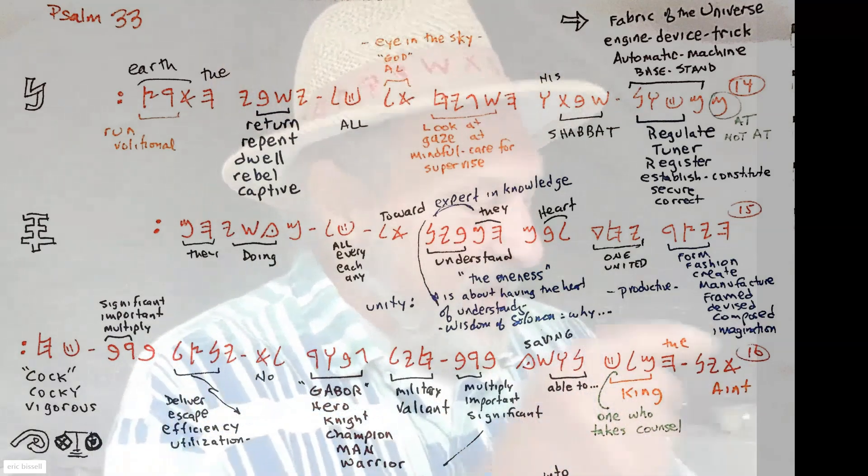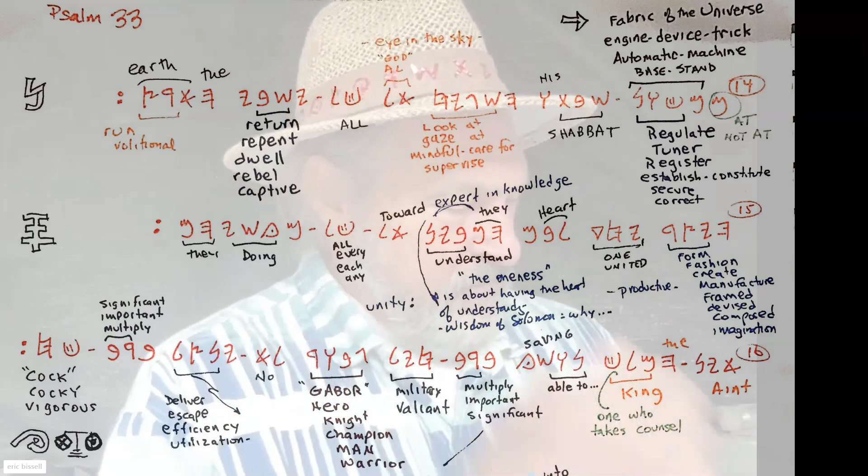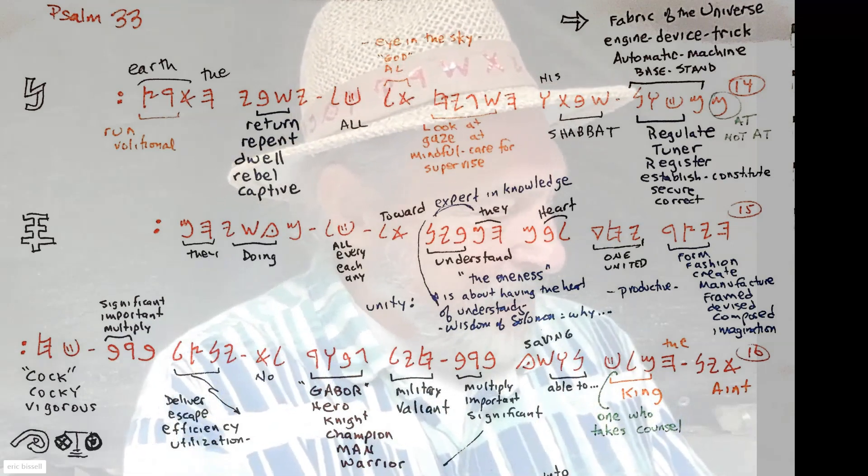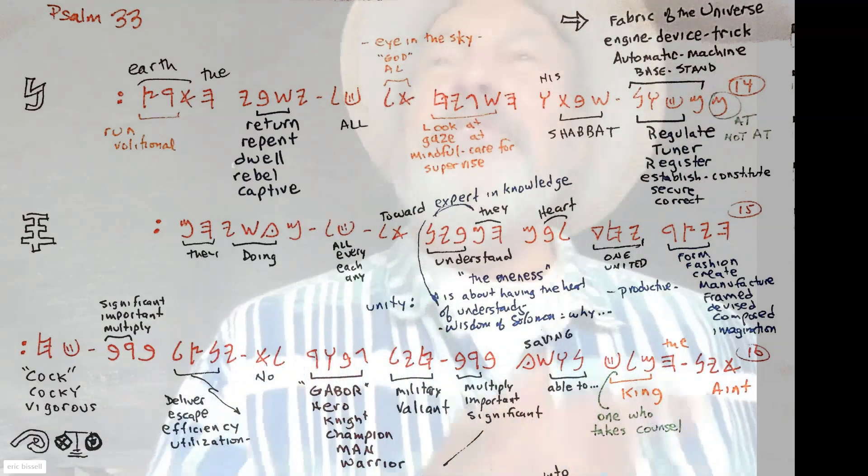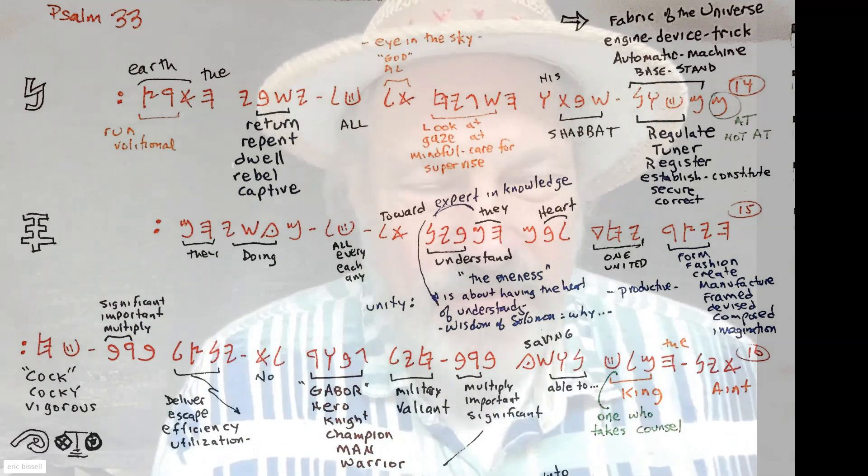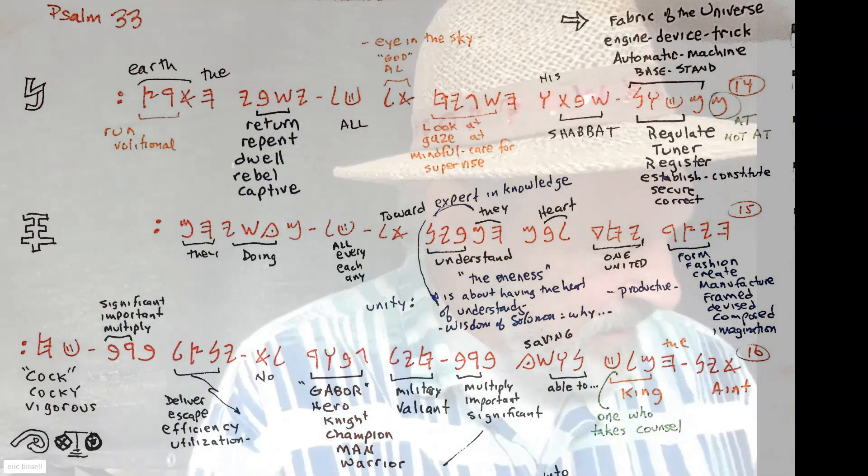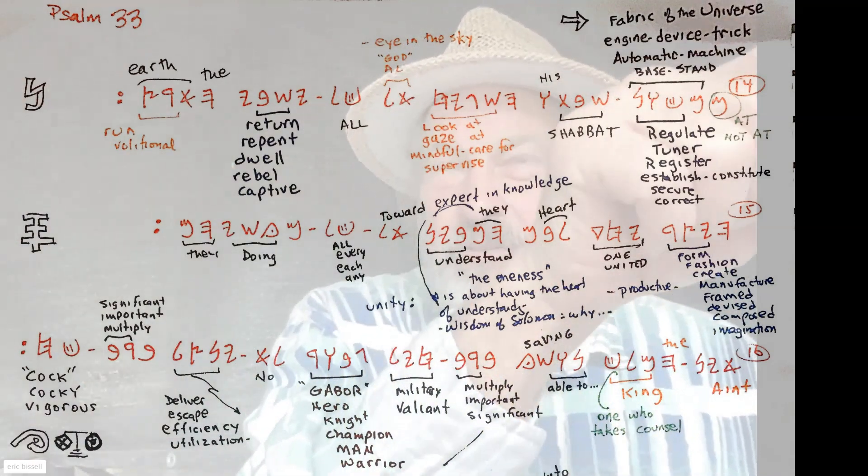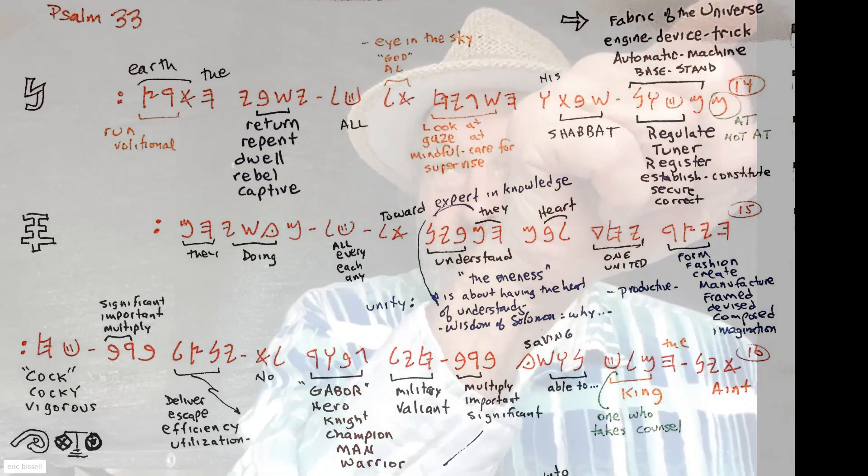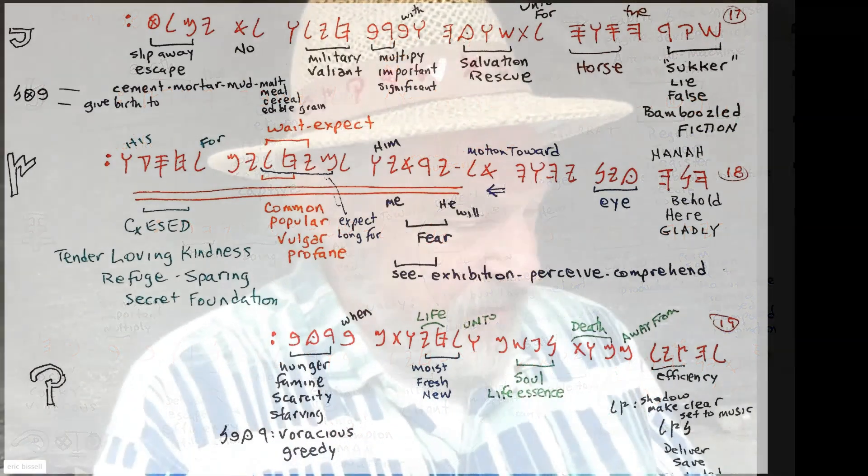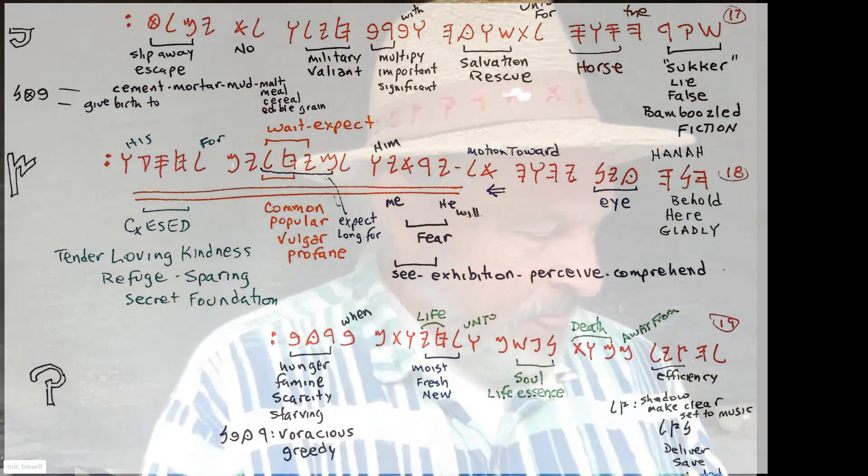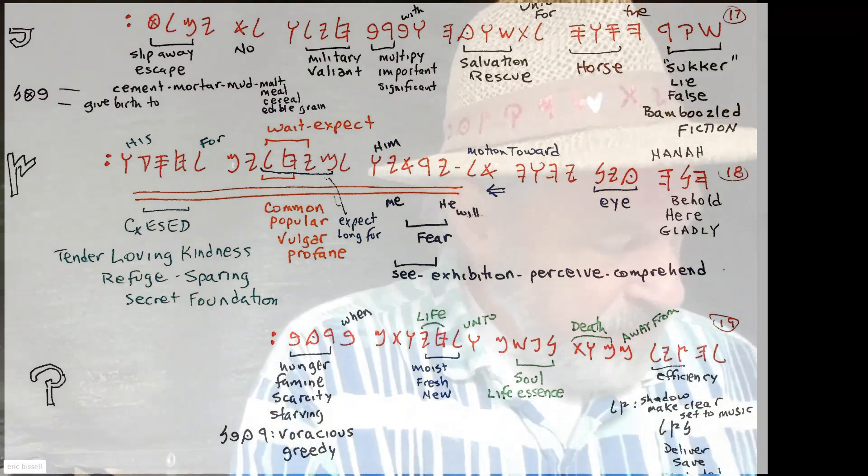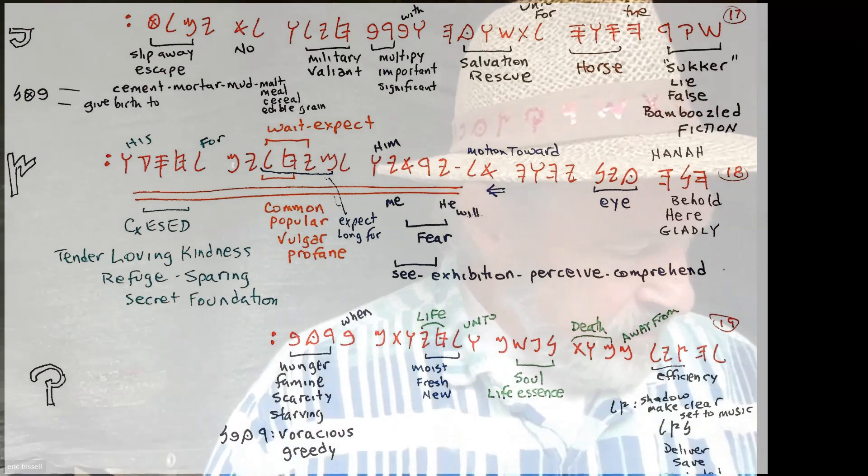Verse 15: Ha'yotzer—the form, the fashion, the manufacturer that He devised. Yachad—a uniting of their hearts. They who will understand—ha'mevin—toward all they do, lining up with the Tzalmik, the engineered structure. Once you get it, do what you're doing on purpose because it's what He did. That's the uniting of the hearts of His people: let's do what He said because that's the way it works. It's the truth. Forget your doctrine. It's not about arguing doctrine. What did He say and what did He mean? What's the truth? Verse 16: There ain't a king able to save by multiplying military champions. Men of war will not be efficient, utilizing any escape even if you multiply their vigor. Even if you've got AI soldiers, that's not where there's salvation and success.